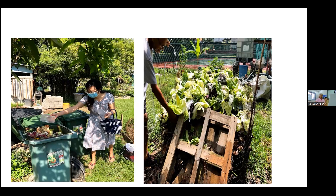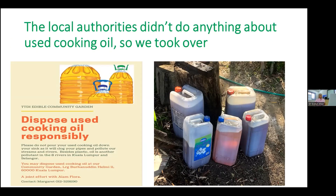Now we don't need that because we have enough people donating. We were also concerned about how people dispose of used cooking oil. We have a river running through Tamantun Dr. Esmang — Sungai Penchalan — and you can see an oily surface on it. Restaurants in Tamantun were just throwing used cooking oil down the drain. So we decided we're going to do something: we provided containers for people to discard their used cooking oil, and then contacted companies that actually paid us for it.